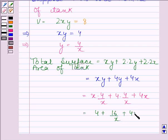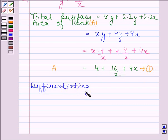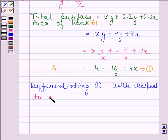And let us denote this area by A. So A is equal to 4 plus 16 by x plus 4x. Let us name this as equation number 1.